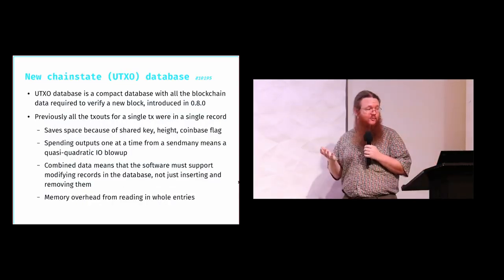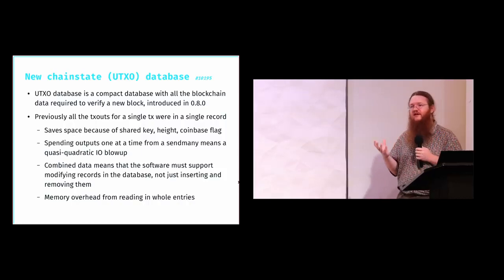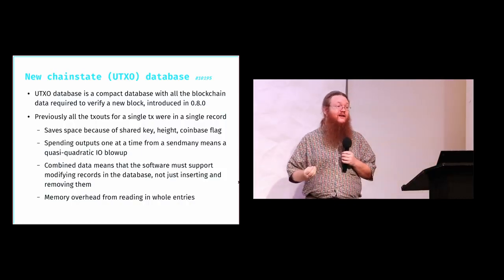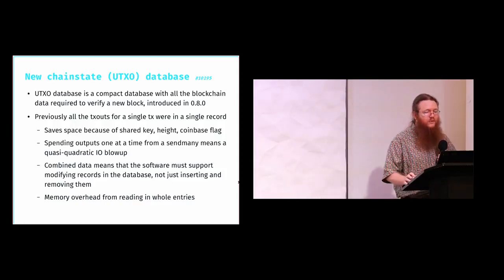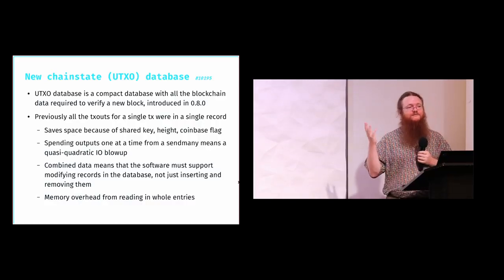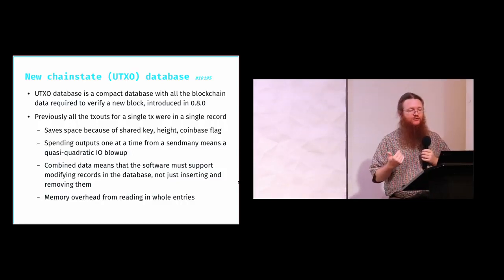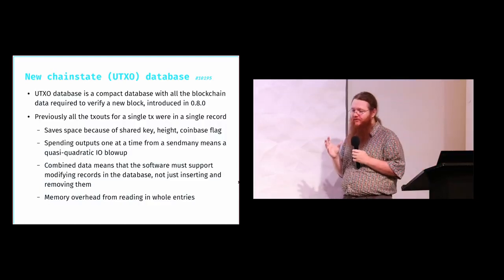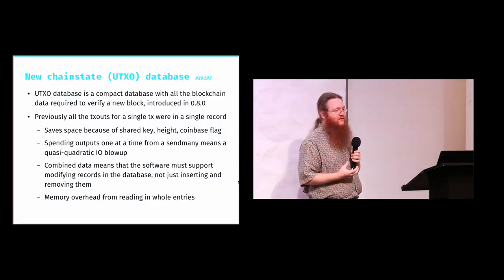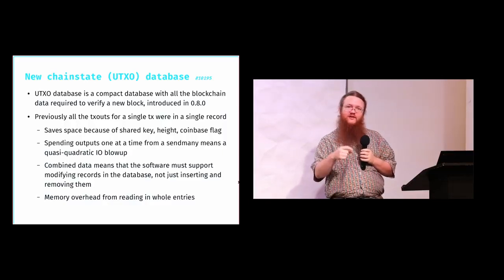The first really important performance improvement is that we have completely reworked the chain state database in Bitcoin Core. The chain state database stores the information required to validate new blocks as they come in — it's also called the UTXO set. The current structure has been around since 0.8.0, and when it was introduced it was something like a 40x performance improvement. The previous structure is logically thought of as a per-output database, but that's not actually how it was implemented on the backend.